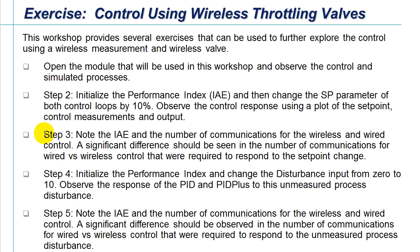We'll then initialize our performance index again, and after we do that, we'll introduce a disturbance change in both the flow processes for wired and wireless control and observe then the integral of absolute error and number of communications that were used in control.